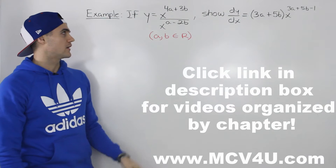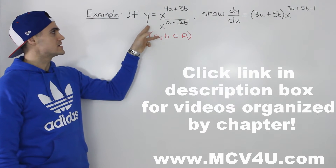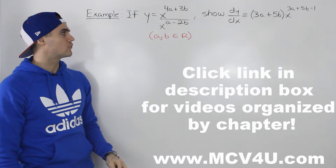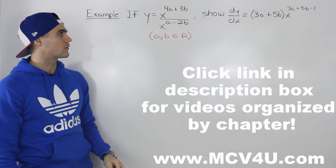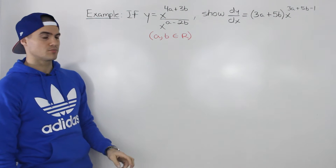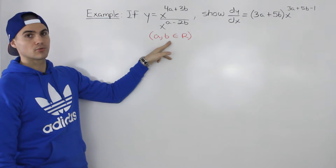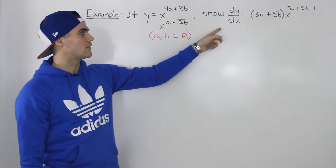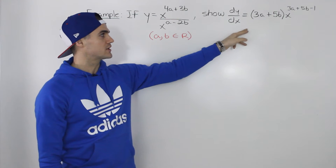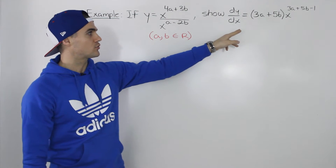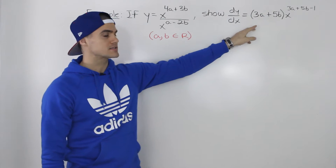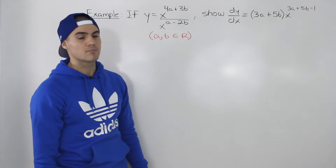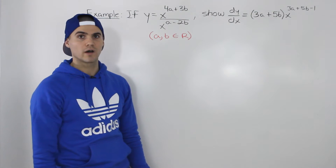Moving on to the next example: if y is equal to x to the power of 4a plus 3b, over x to the power of a minus 2b, where a and b are any real numbers, show that the derivative of that function is equal to 3a plus 5b, in brackets, times x to the power of 3a plus 5b minus 1.